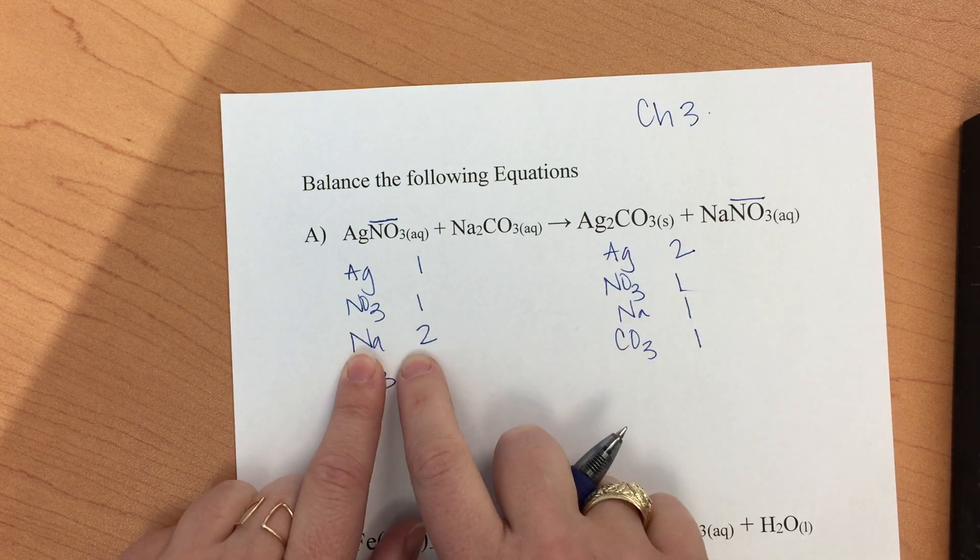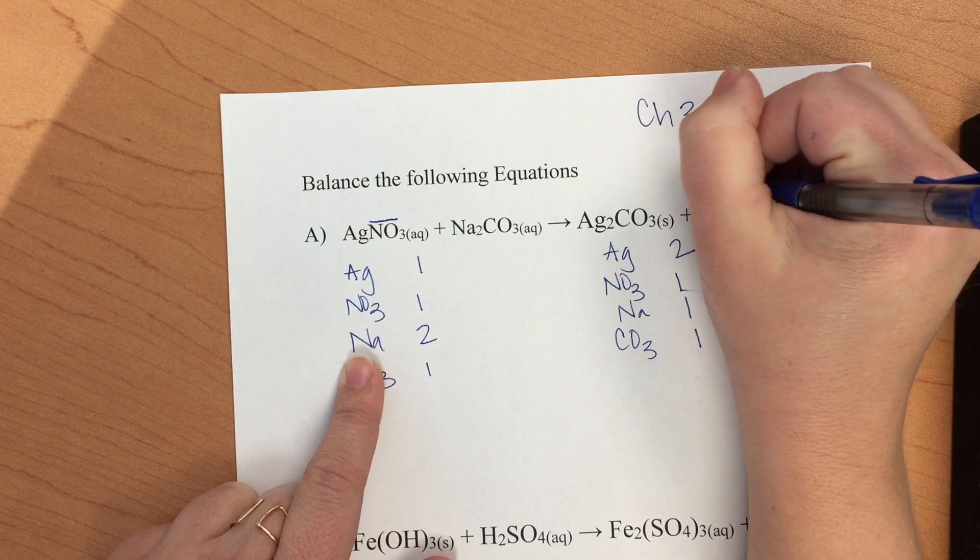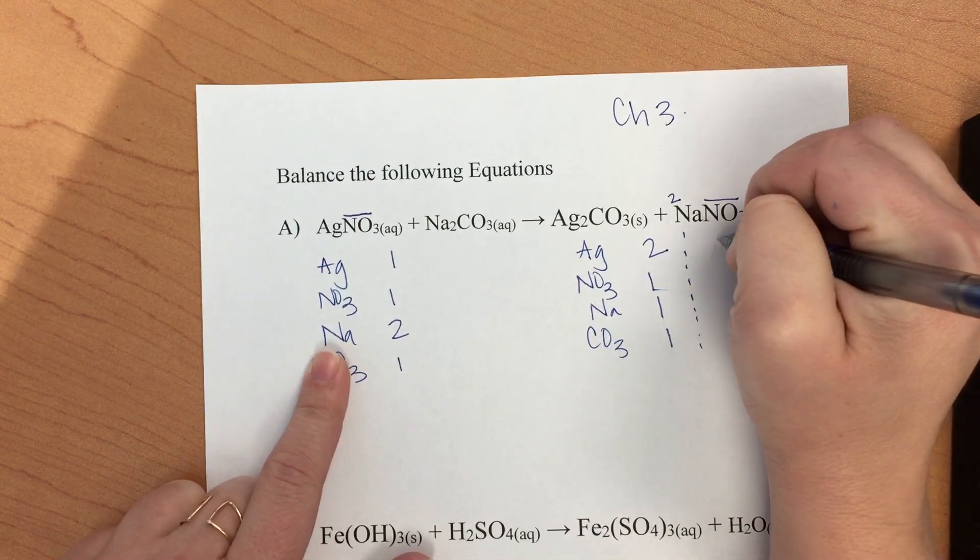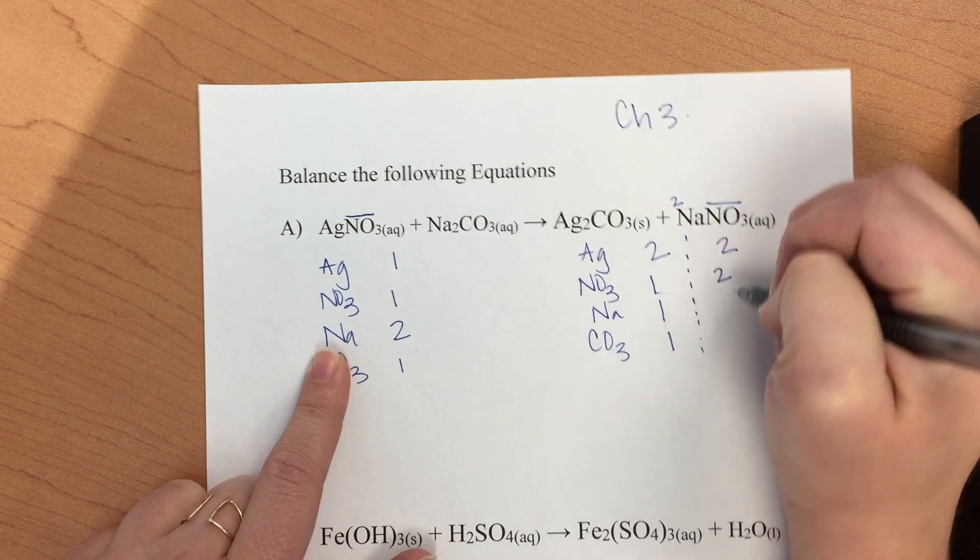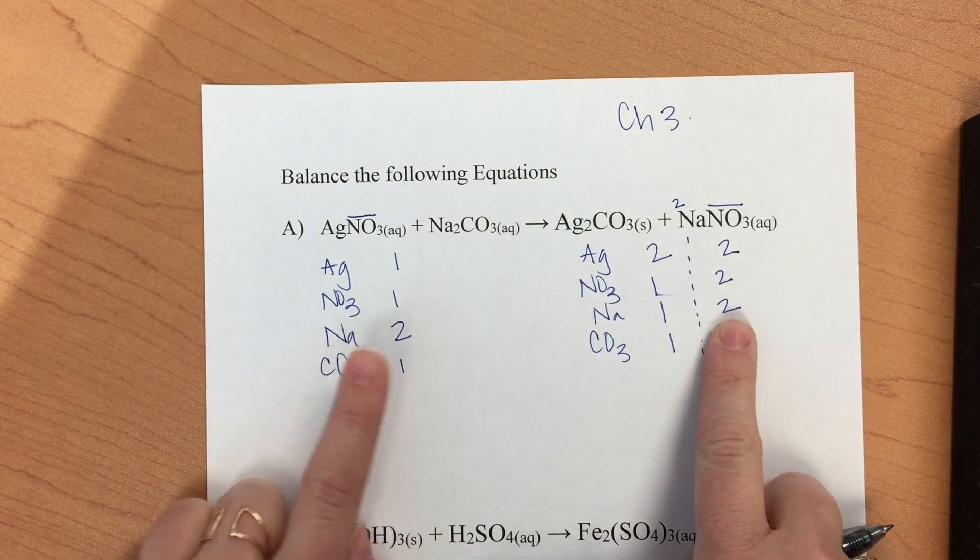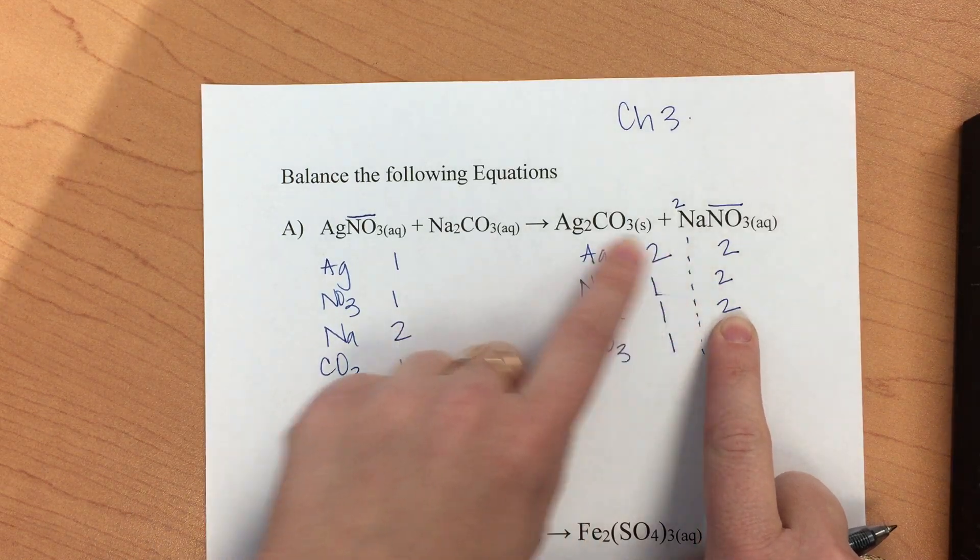We're going to add a two here. For our second round on the side, we'll have two silver, two nitrates, two sodiums, one carbonate. So now we have half of ours balanced.